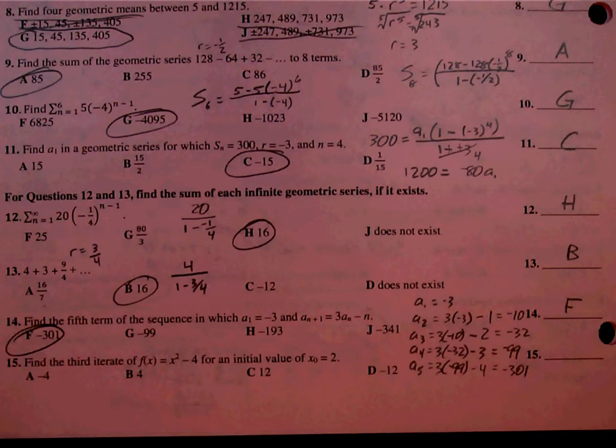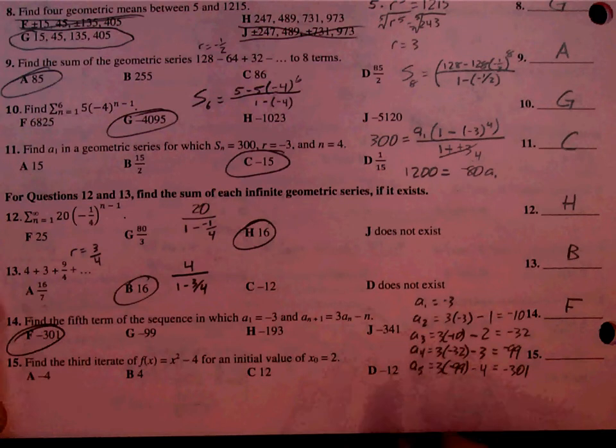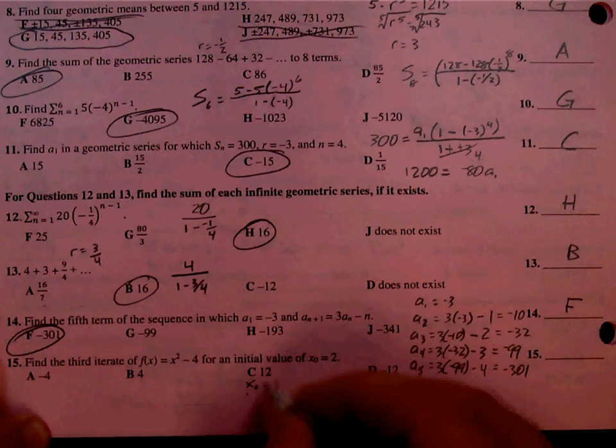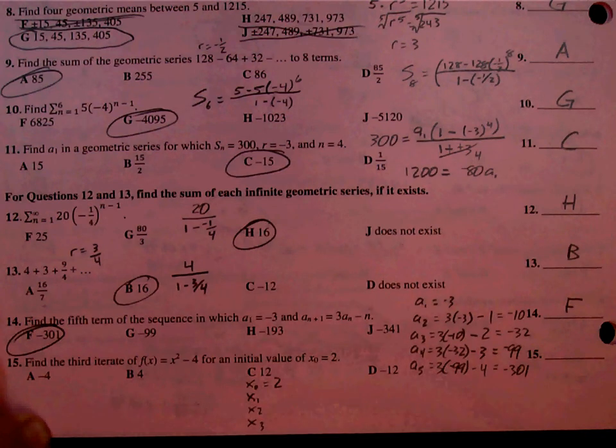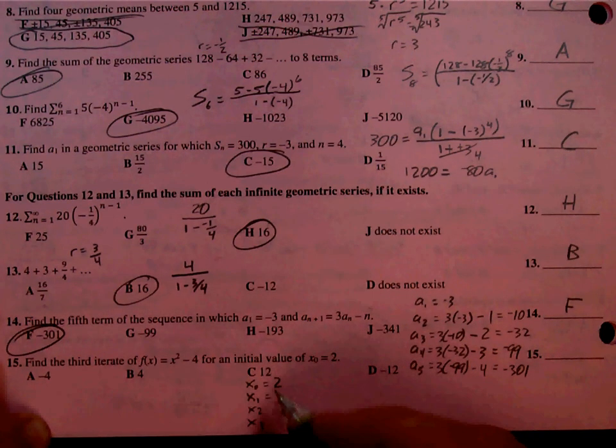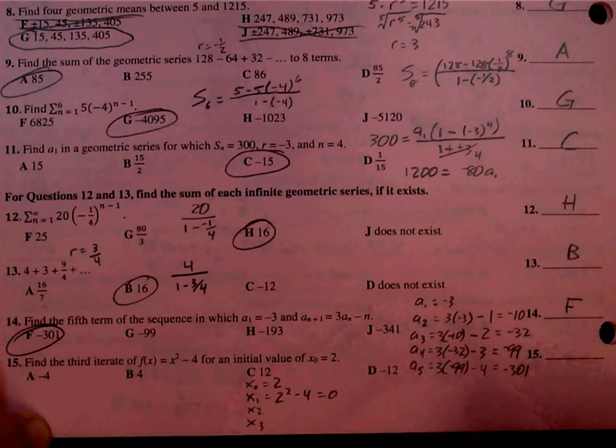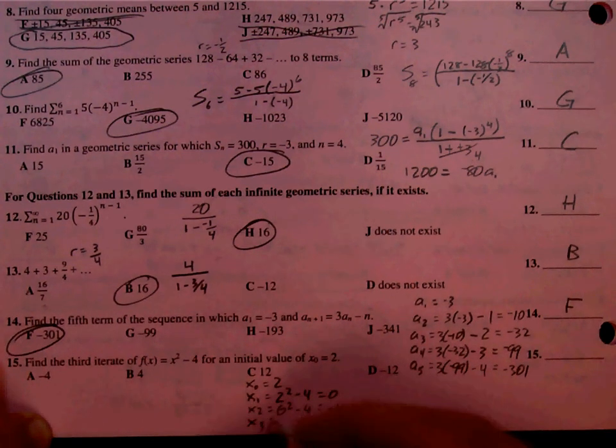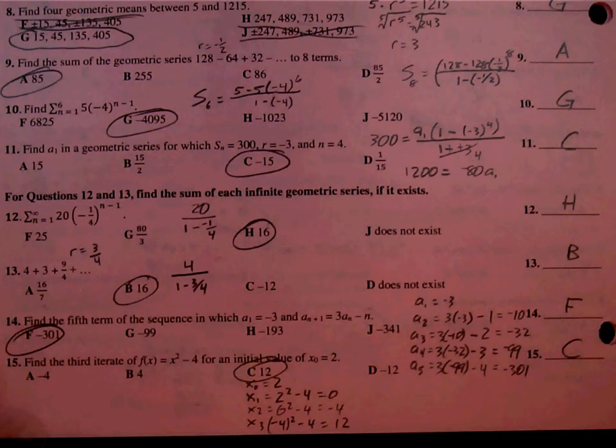And the last question. Find the third iterate. That's something we didn't actually talk about, at least in my class. But it's similar to what we just did. So we know X sub 0 is 2. The iterates just means we're finding the next 3: X sub 1, X sub 2, X sub 3. And I want the third one. All you do is plug it in. So you plug 2 into the equation. So 2 squared minus 4, so it's 4 minus 4, which is 0. And then you plug 0 in. 0 squared minus 4 is negative 4. And then you plug negative 4 in. Negative 4 squared is 16, minus 4 is 12. 12 is our answer. And that is the end of the packet.